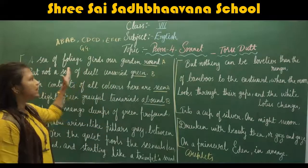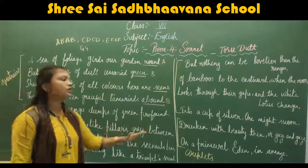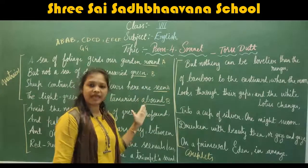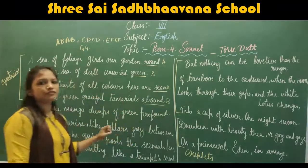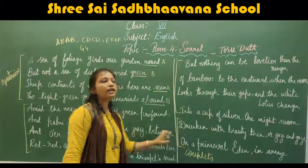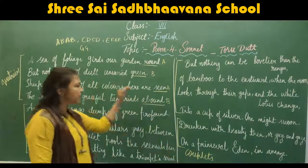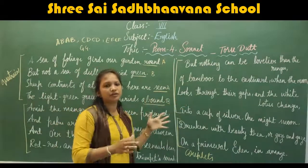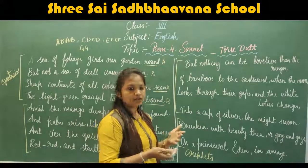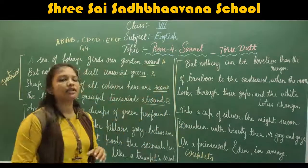So, to summarize: a sonnet is a one-paragraph poem with 14 lines. Those 14 lines are divided into groups of four — called quatrains — and a final two lines called a couplet. The first 12 lines provide description and the last two lines give the conclusion. This poem is written by Toru Dutt.